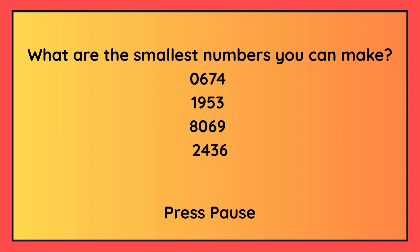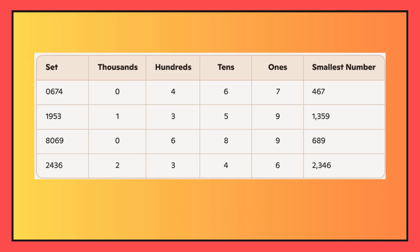What are the smallest numbers you can make? For the numbers 0, 6, 7 and 4, the smallest number is zero, so you go straight to the hundreds — your answer should be four hundred and sixty-seven. For the numbers 1, 9, 5 and 3, the smallest number is one thousand three hundred and fifty-nine. For the numbers 8, 0, 6 and 9, the smallest number is six hundred and eighty-nine because the smallest number is zero. And finally, for the numbers 2, 4, 3 and 6, the smallest number is two thousand three hundred and forty-six.